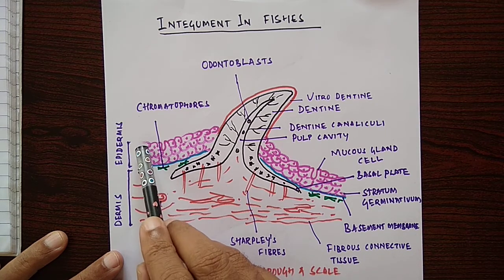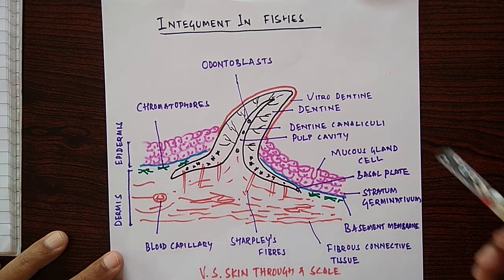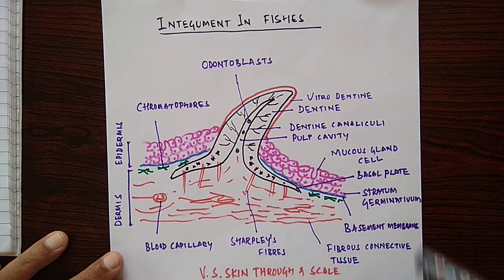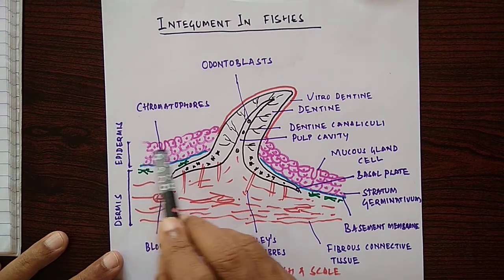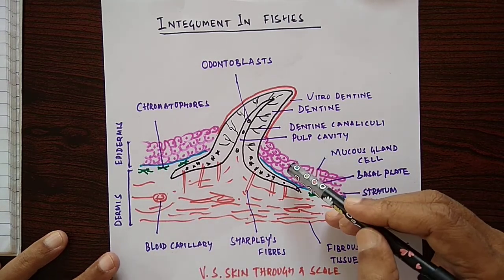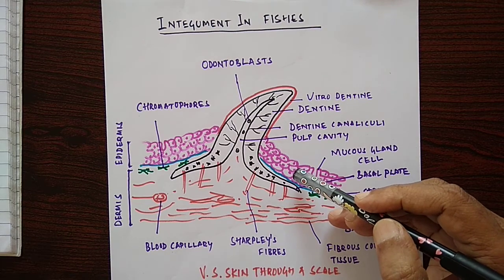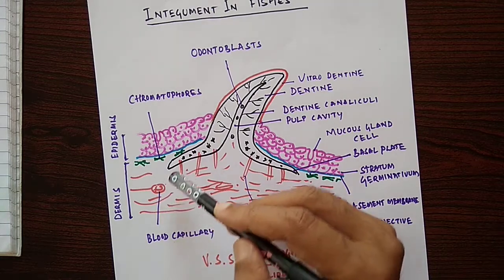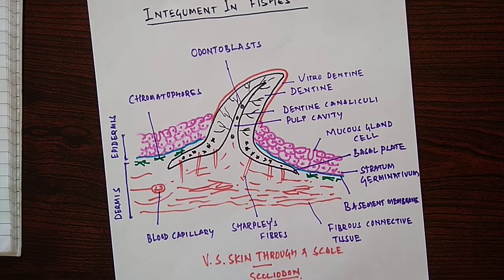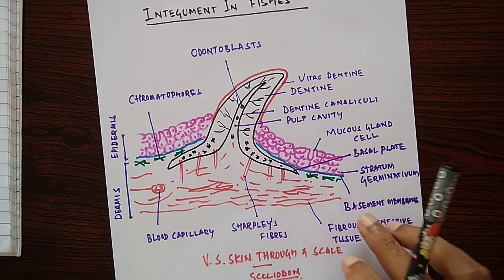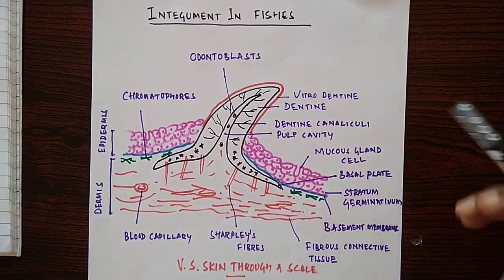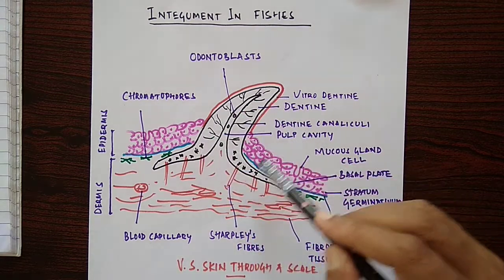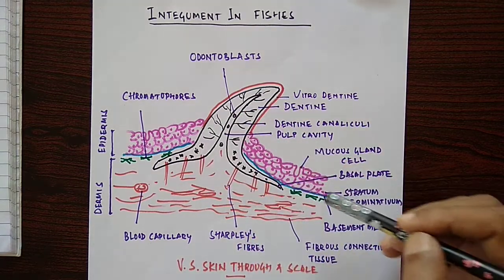Epidermis is a stratified multilayered region. It is derived from the ectoderm of the embryo, whereas dermis is derived from the mesoderm of the embryo. This is a scale — it is a placoid scale.